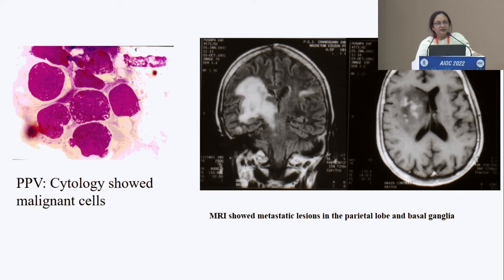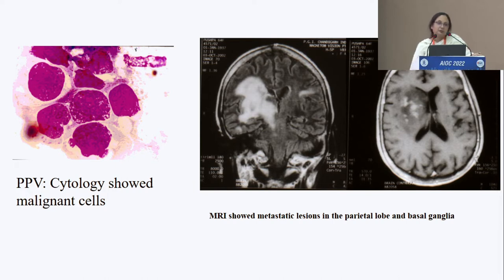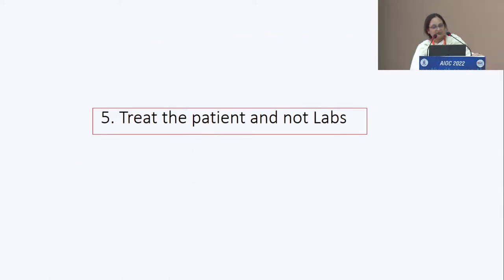We persisted and went on to a diagnostic PPV, which showed malignant cells. We then ordered an MRI, which showed there was metastasis from the primary disease. So if the investigation in scenario four puts you in doubt, investigate further but do not jump to start treatment if you are not convinced about the lab result.